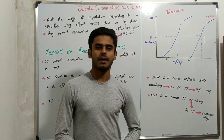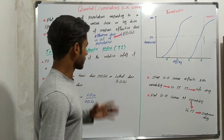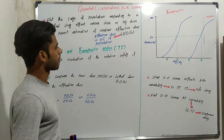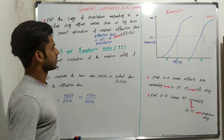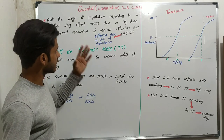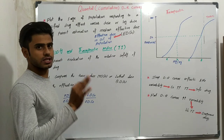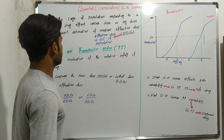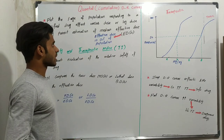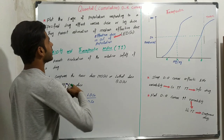Welcome back. We were discussing the general principles of pharmacology — specifically the second chapter on pharmacodynamics. In this lecture we will discuss the quantal cumulative dose-response curves. The second name of quantal cumulative dose-response curves is the population curves. Remember that population curves are also known as quantal cumulative dose-response curves.